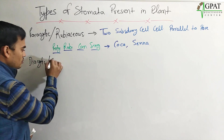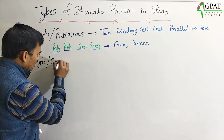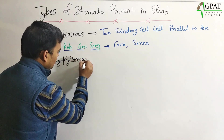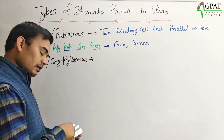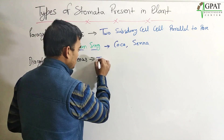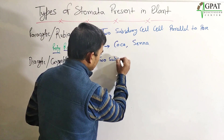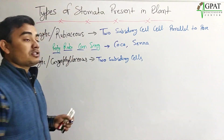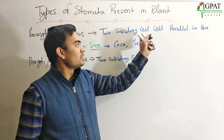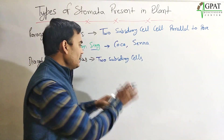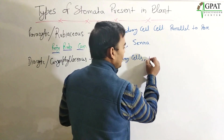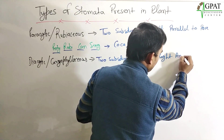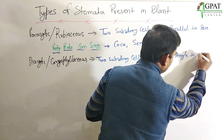The next stomata is diacytic stomata, also known as Caryophyllaceous stomata. In diacytic stomata there are also two subsidiary cells, but unlike paracytic stomata where subsidiary cells are parallel to the pore, here the two subsidiary cells are at right angles to the pore.